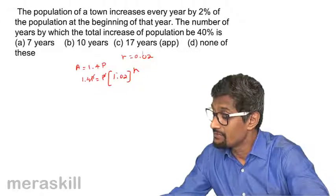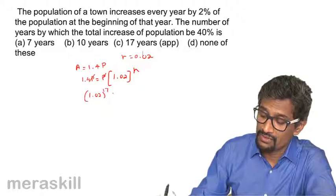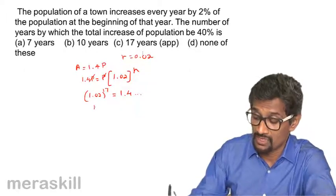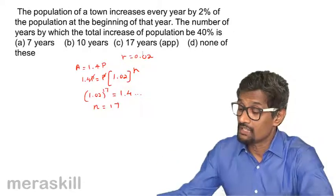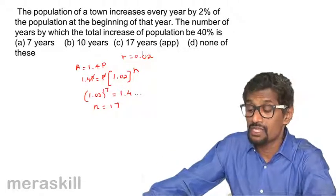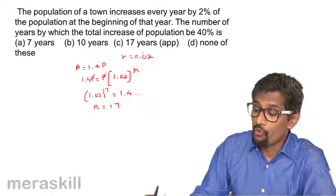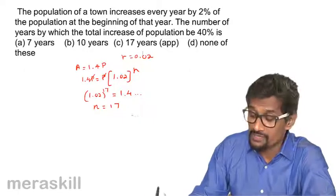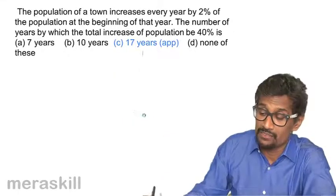Multiplying 1.02 by itself, when N is 17 we get 1.02 raised to 17 equals 1.400 something. That means N should be equal to 17. When the number of years is 17, the population would become 1.4 times of itself — that is, the population increases by 40%.